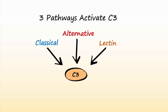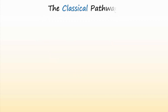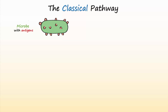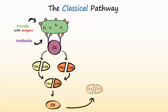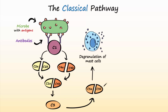The classical pathway was the first to be discovered. This pathway starts when the variable region of a pair of antibodies attaches to an antigen on a microbe. This complex then activates C1, which activates C2 and C4. C2 is split into C2a and C2b, while C4 is split into C4a and C4b. C2a and C4b come together to form an enzyme that cleaves C3 to activate it. Activated C3 acts as an anaphylatoxin to initiate degranulation of mast cells, opsonization, and cytolysis.